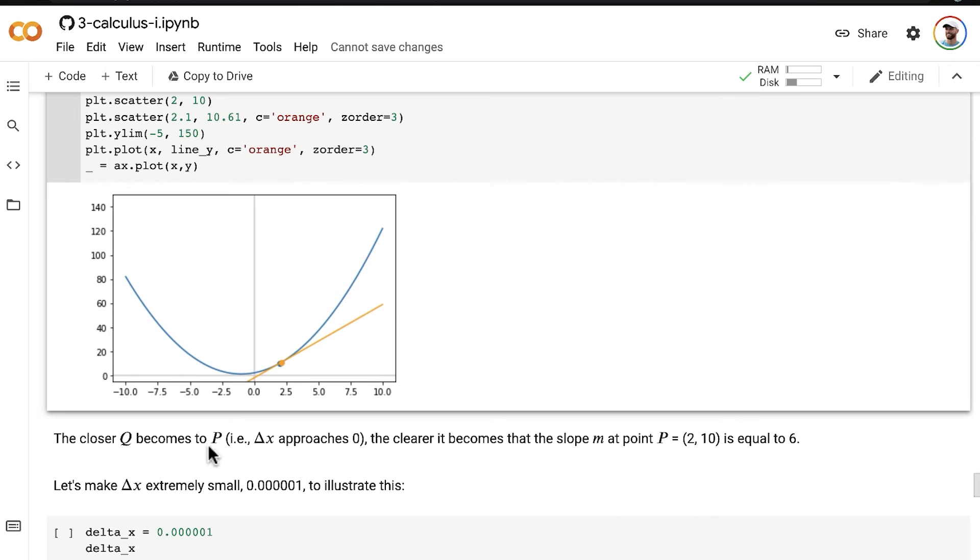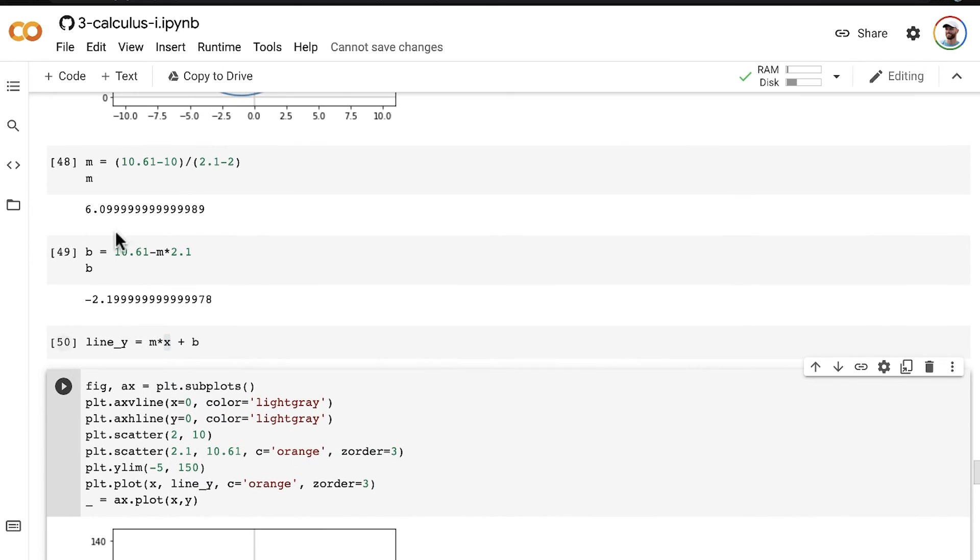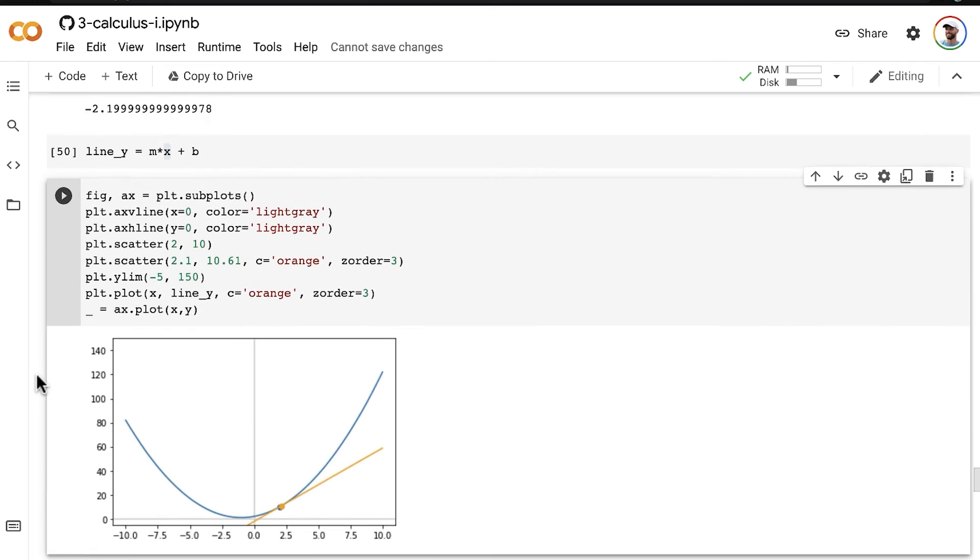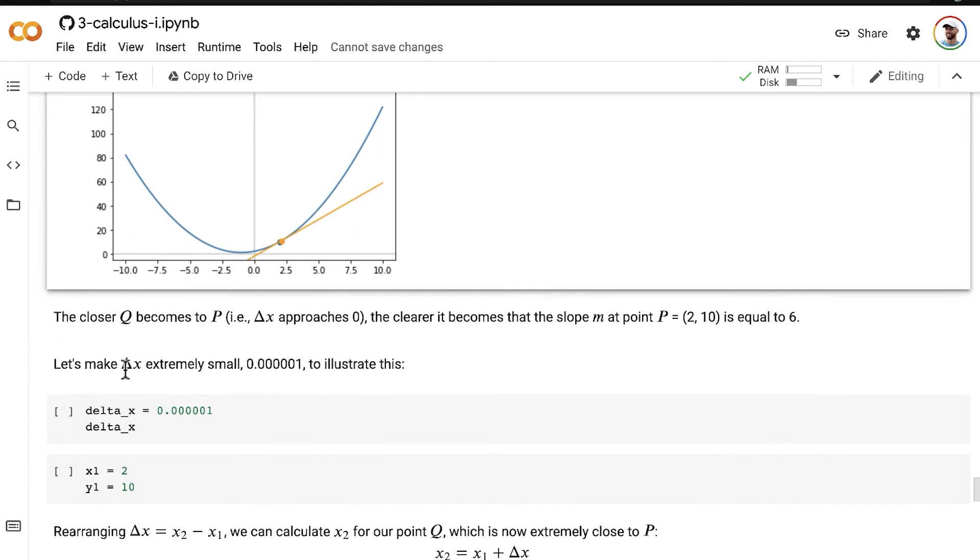And again, the closer Q becomes to P, that is, as delta x approaches 0, so here we see that limits language starting to come in. As delta x approaches 0, the clearer it becomes that the slope m at point P, where that point P, the blue point, remember, is at 2 and 10. And as delta x approaches 0, it becomes clear that the slope of the tangent line at point P, the slope of the curve at point P, is equal to 6. We're starting to get pretty close to 6 here, but I can demonstrate this for you pretty conclusively here by making the delta x extremely small.